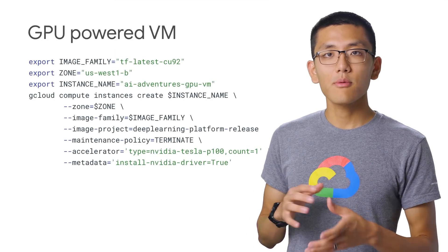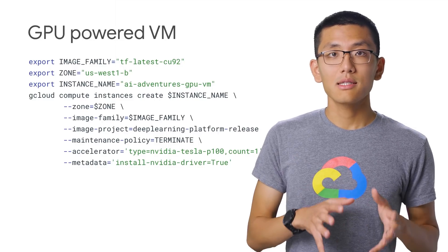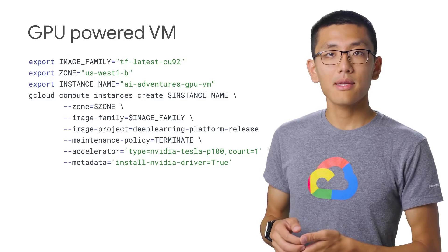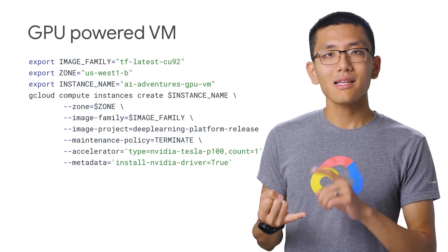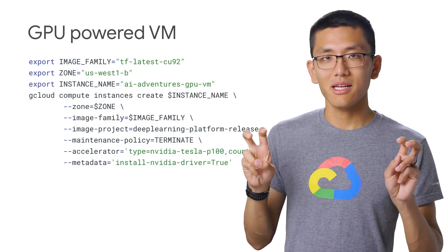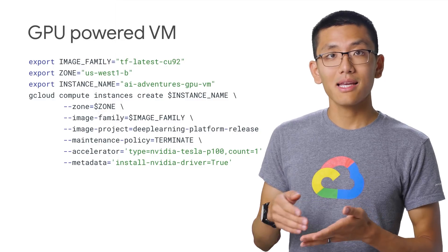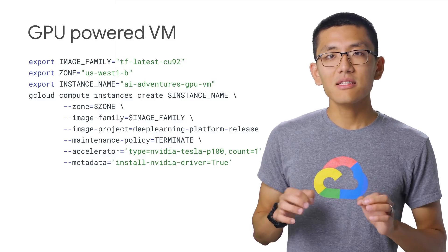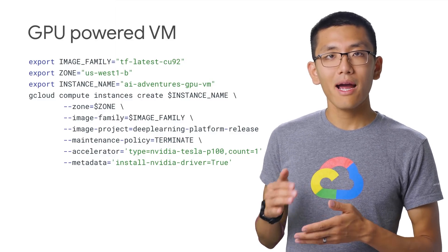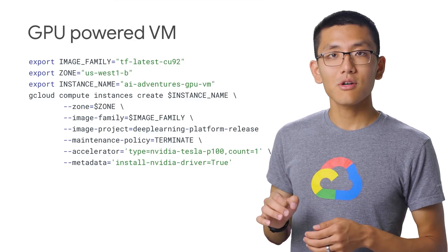Now let's look at how to actually get a GPU-powered deep learning VM going. The step that differs from the CPU workflow is how we actually start up the VM. We can take the command that we used before and add a few extra arguments. First, we'll need to set the maintenance policy to terminate. This is due to the fact that we can't live migrate a GPU-powered virtual machine. So for maintenance, it'll actually shut down the VM, but you can have it auto-restart — so always be sure to save your work. Next, choose your GPU type and count, informed by that quota deep dive we just did. And finally, add a piece of metadata, which will ensure that the drivers to power your GPU are installed on your behalf.